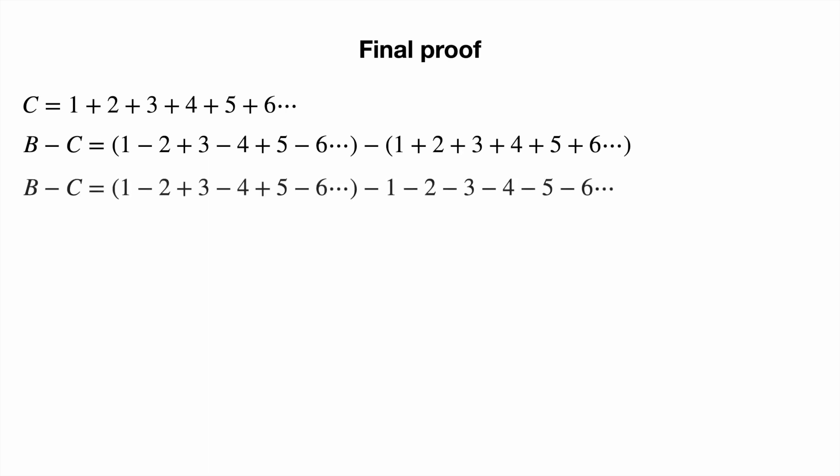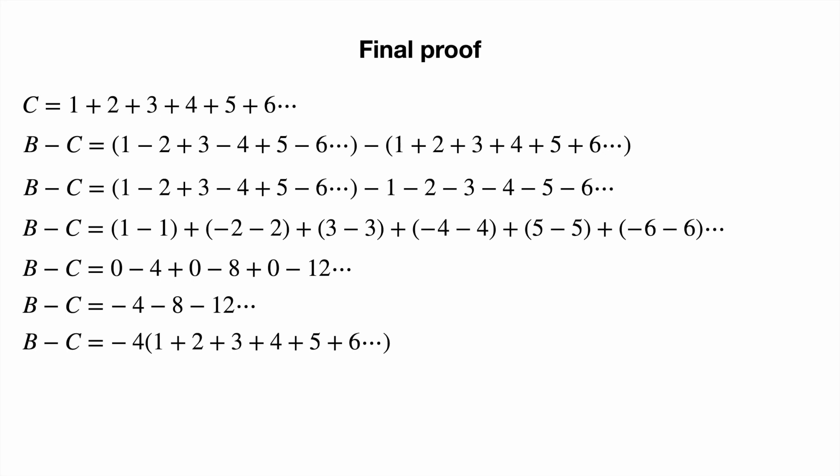With some rearrangement and manipulation we are going to get something very familiar yet very unexpected. Since all numbers are multiples of minus 4, we can factor it out to get minus 4 times C.